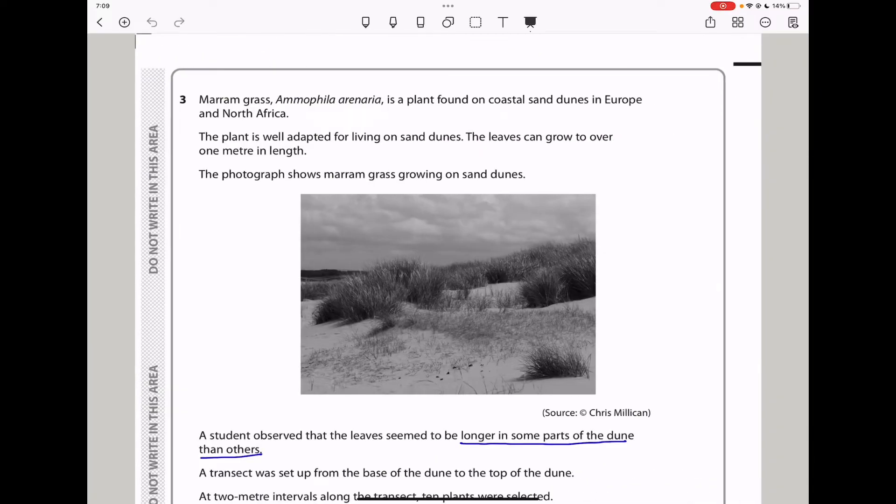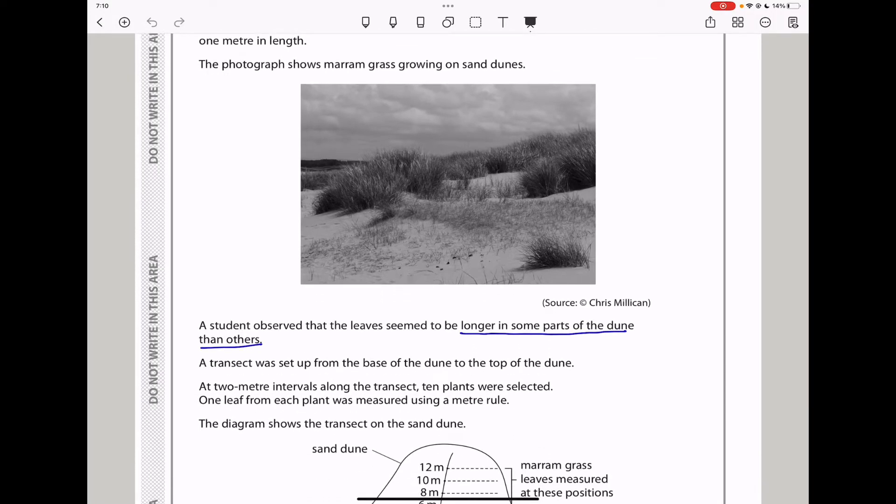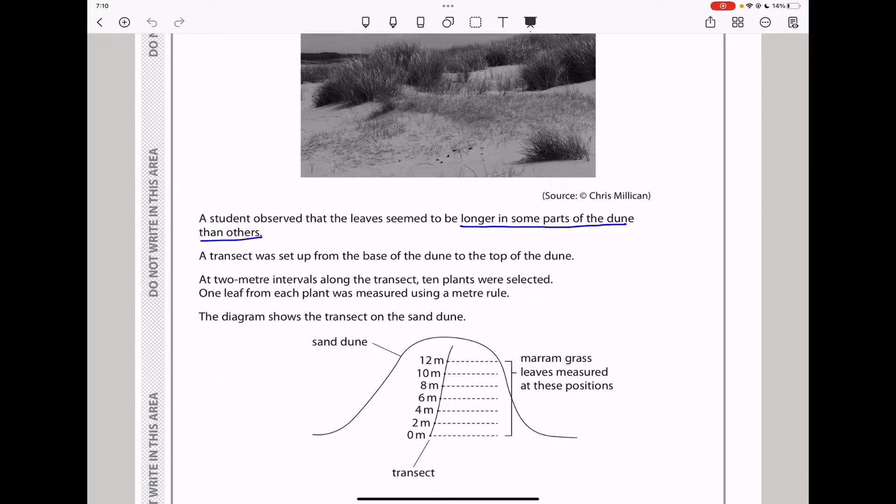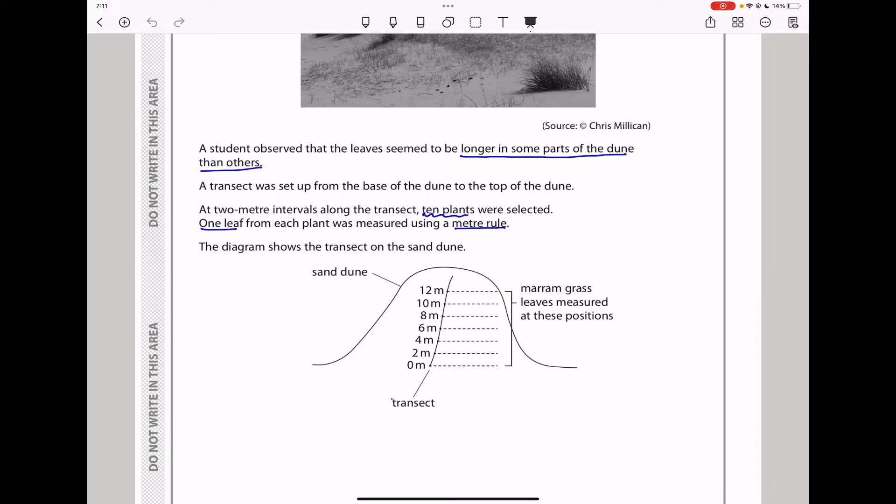Let's continue to question three. Question three: Marram grass is a plant found on coastal sand dunes in Europe and North Africa. The plant is well adapted for living on sand dunes. The leaves can grow to over one meter length. The photograph shows Marram grass growing on sand dunes. They said a student observed that the leaves seem to be longer in some parts of the dune than others. A transect was set up from the base of the dune to the top of the dune. At two meter intervals along the transect, 10 plants were selected. One leaf from each plant was measured using a meter rule. So they say the diagram shows the transect on the sand dune. So this diagram shows the transect on the sand dune and we can see from 0 to 12 meters. That is the sand dune. And then the Marram grass leaves were measured at those locations.